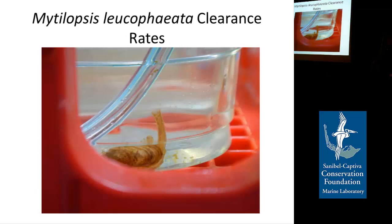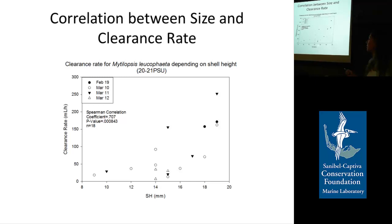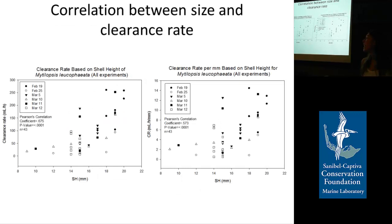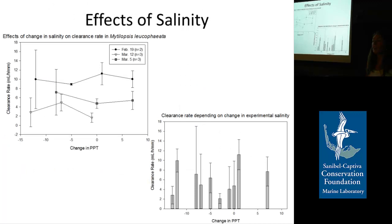For the mussels, I also found the same correlation between shell height and clearance rate. I did a lot of different tests at different salinities and pulled together data from the same experimental conditions to confirm this relationship, which was very significantly correlated. Unlike in the Crepidula, when you divide mussel clearance rate by shell height there's still a correlation — so basically the bigger you get, the more you can filter per millimeter of shell height. It was interesting to see the difference between the two species.